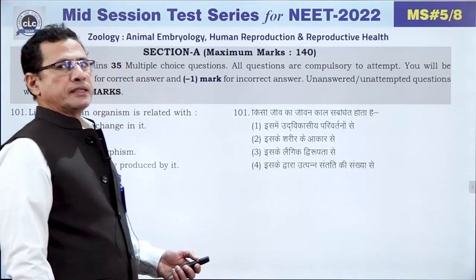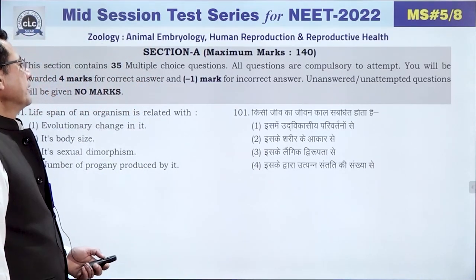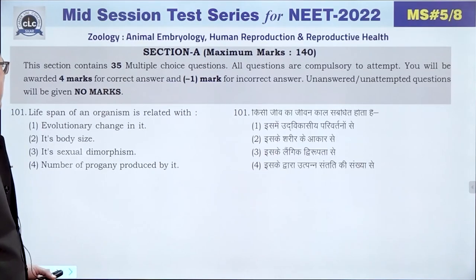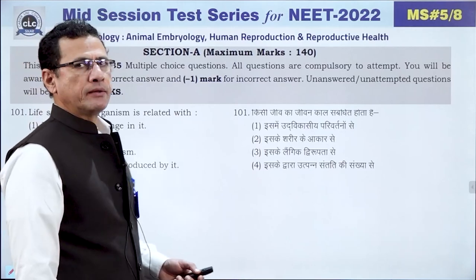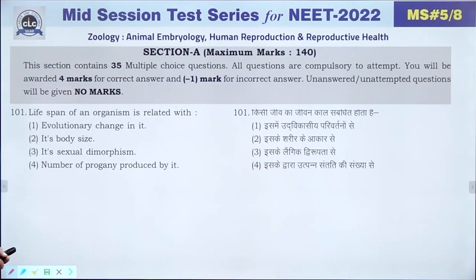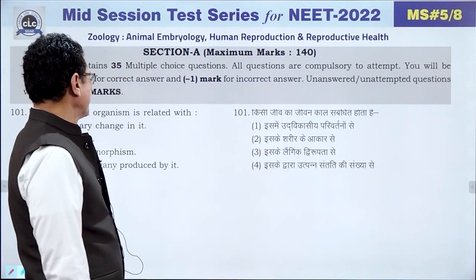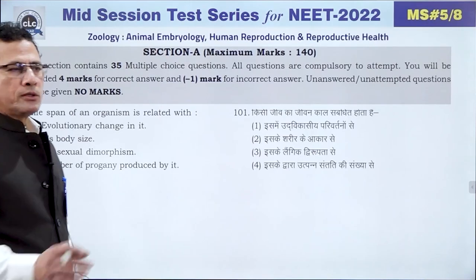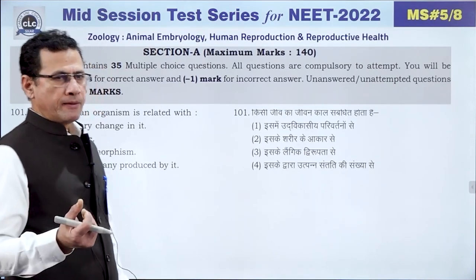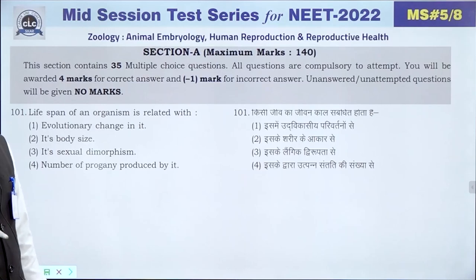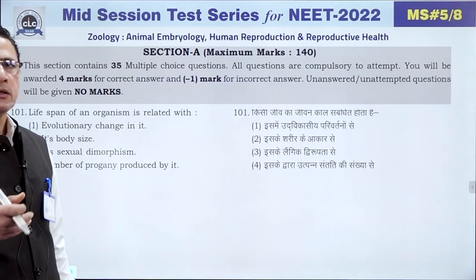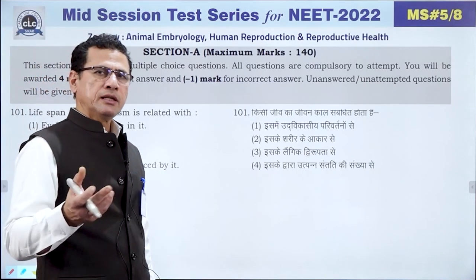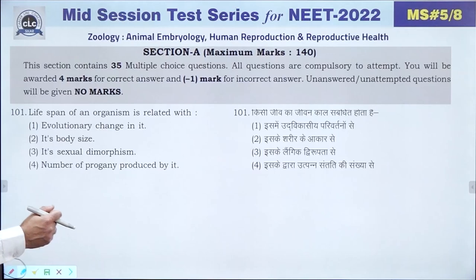This DTS Diamond Test Series is from the topic of Human Reproduction as well as Reproductive Health. The first question asks that the life span of an organism is related with what.